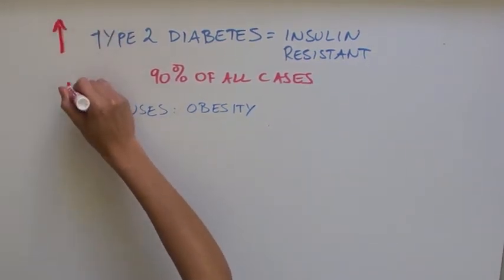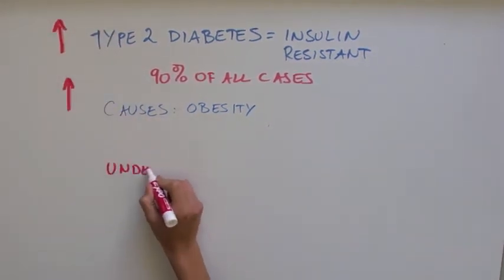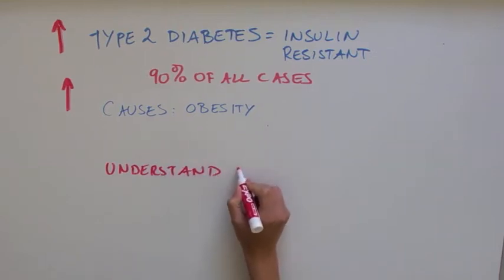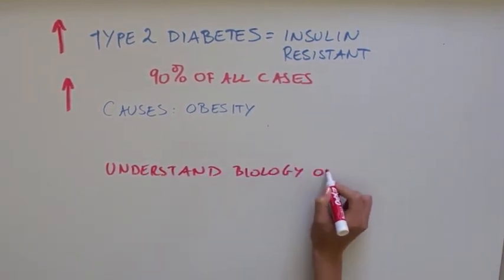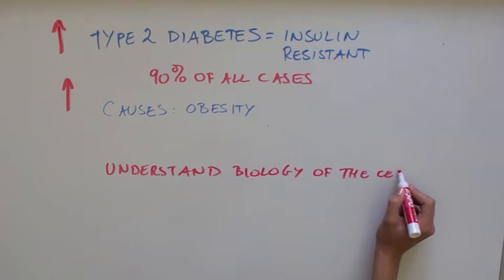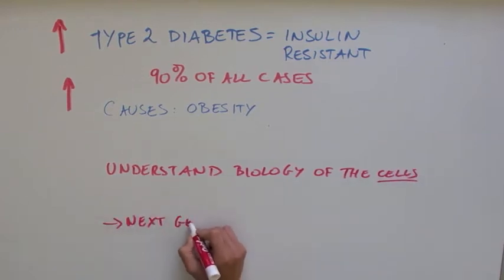Because rates of obesity and type 2 diabetes have increased substantially over the past 50 years, it is important to understand the underlying biology at the level of the cell in order to engineer the next generation of therapeutics.